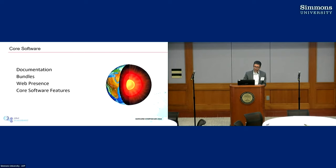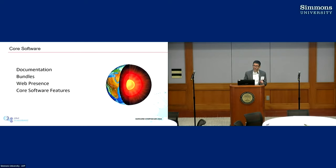So what is the I2b2 core software? There are a lot of things we've talked about today that are I2b2 — people are doing a lot of amazing things with it. The core software is the Java server, the data model, and the web client interface. We are a small group that manages the core software, handling features, maintaining it, adding things that need to go to the whole community, as well as documentation, web presence, and bundling things.